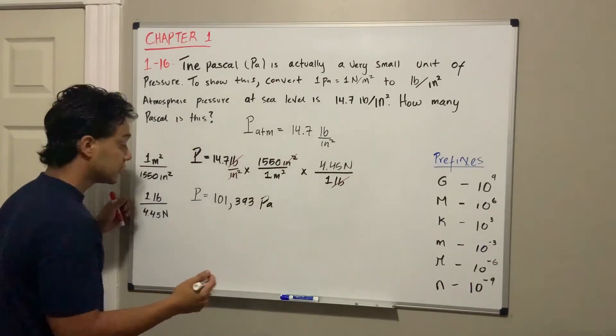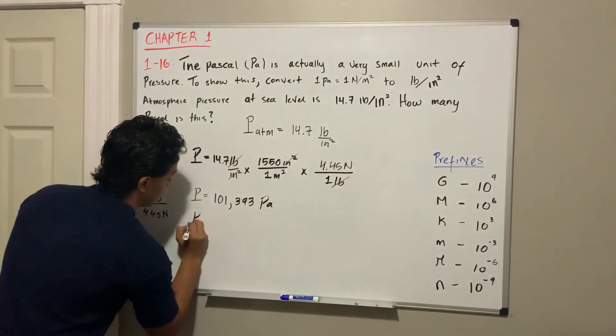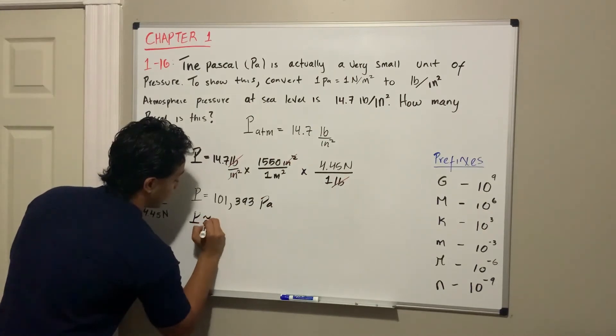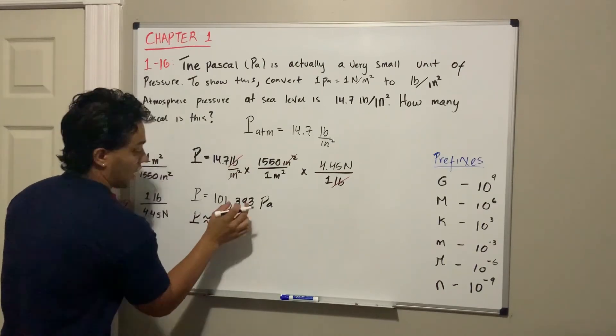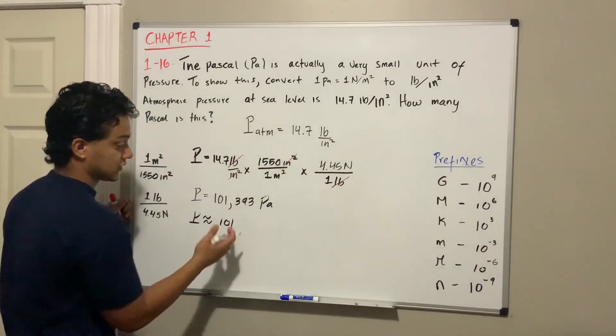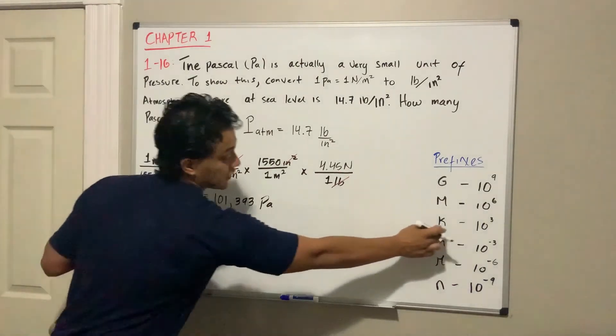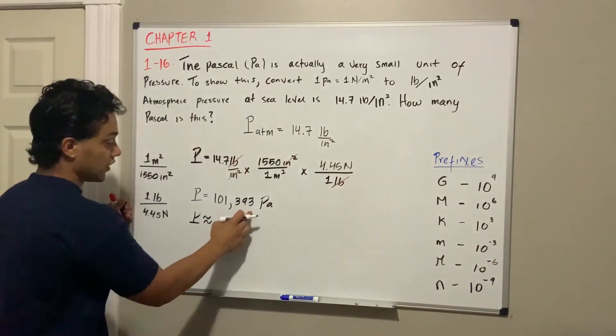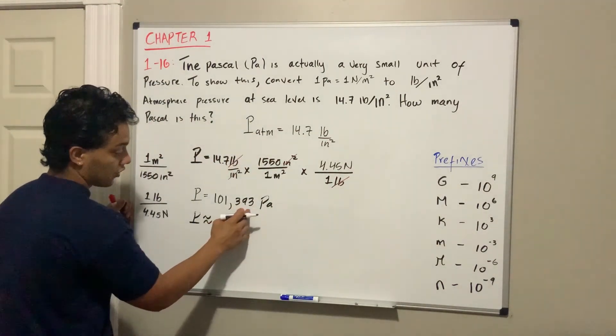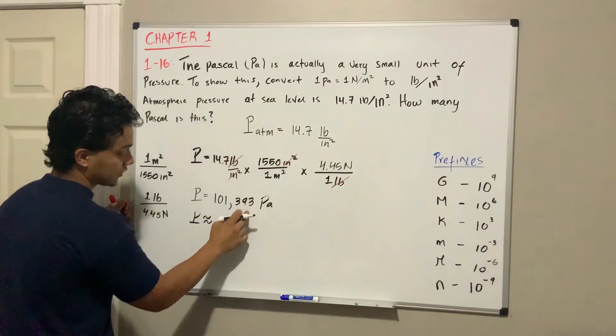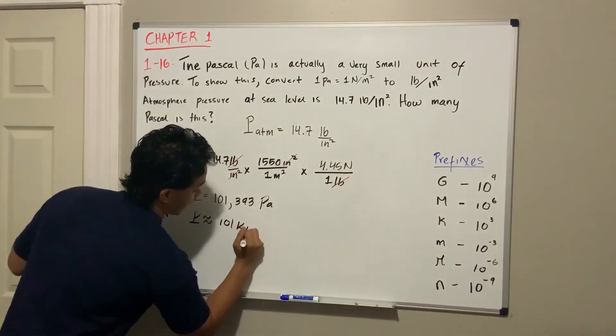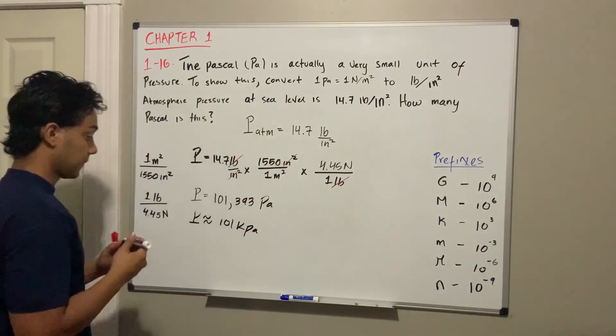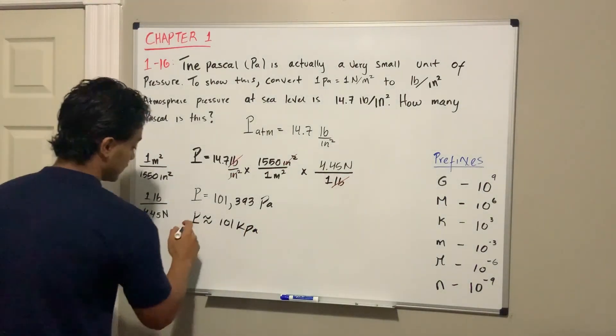We can round this number depending on how many significant figures your book or answer requires. I'm going to convert into kiloPascals. If I want kilo, it means times 10 to the positive 3, so I count three numbers to the left: 1, 2, 3. That's where I put my kilo, and that's my kiloPascal.